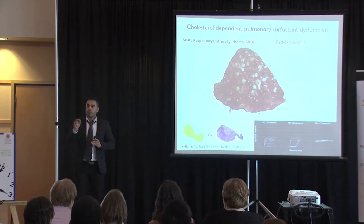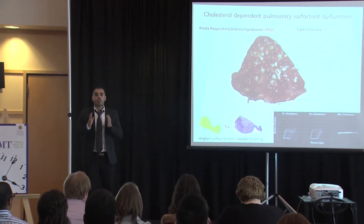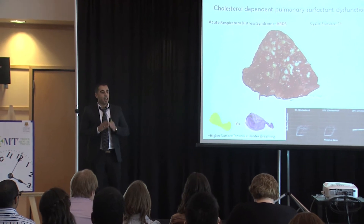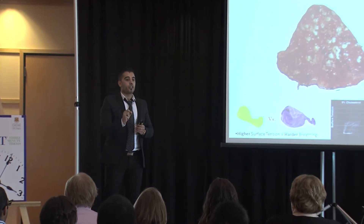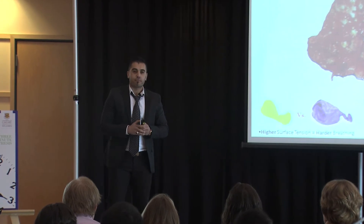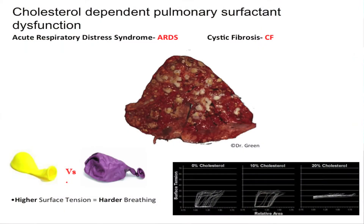They experience difficulty with breathing, which leads to a reduced amount of oxygen in their body, and that is called hypoxia. And if that's not quickly treated, it will lead to death. This image here is of a lung of a teenager who died from cystic fibrosis as a result of impaired mucosal clearance, airway constriction, and surfactant dysfunction.